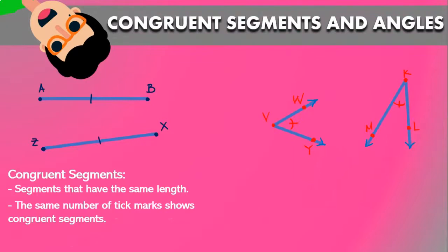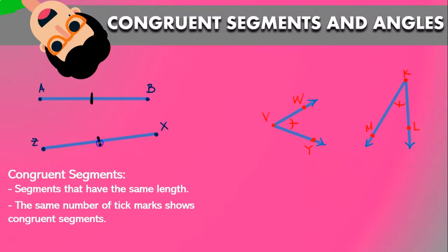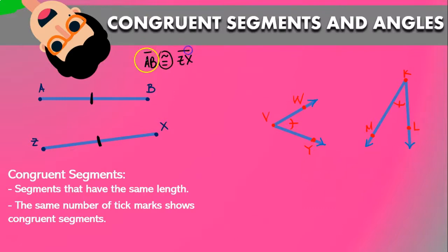Congruent segments are segments that have the same length. The same number of tick marks shows the congruence. So in this case, segment AB has a single tick mark and segment ZX also has a single tick mark, meaning AB is congruent to ZX — that is the symbol for congruent.